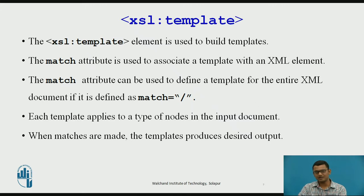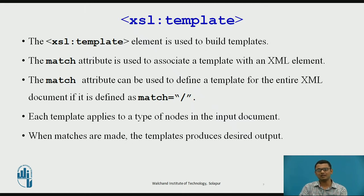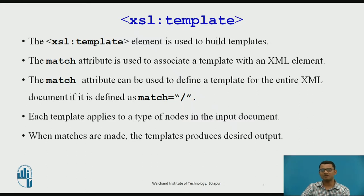Now we shall look at all the basic elements. The first element is the template element. If you want to apply certain transformation or styling to a particular set of elements, you include all those elements in the template. You define a template, and all the elements — for example, name, roll number, or class of a student — are included in it. All the styling done to the template is applicable to all the elements within that template. The match attribute is used to associate a template with an XML element, and all elements used in the match attribute will have that particular template applied.